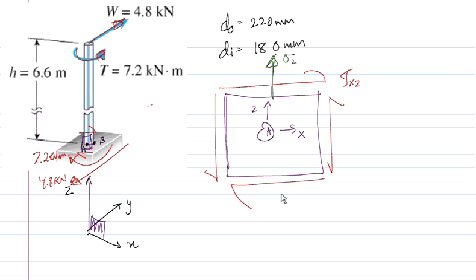This should be sigma z, and that would just be equal to my moment, which would be 4.8 kilonewtons times 10 to the 3 newtons into the distance, so that's 6.6 meters. That's my moment multiplied by the radius for the maximum distance. It's going to be the outer diameter divided by 2, so that's 110, so that's 0.11 meters divided by I for this guy.